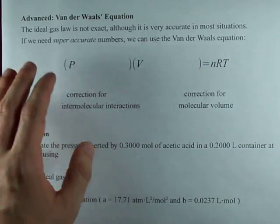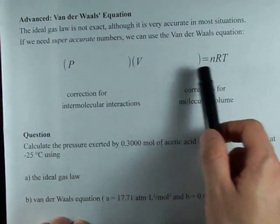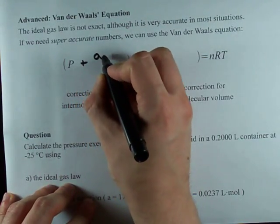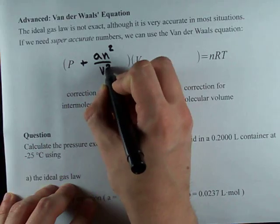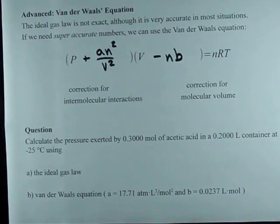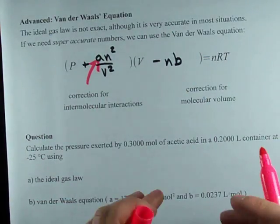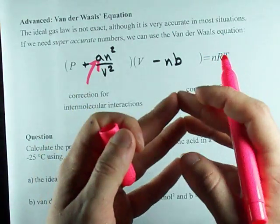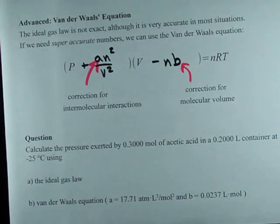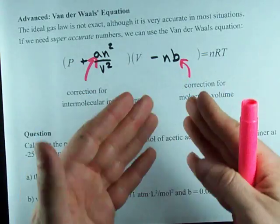Now the problem is, if we need a super accurate number we can't be making those kinds of assumptions. So we have a more accurate version of PV equals NRT and it's called the Van der Waals equation. It's different in that you add a term AN squared over V squared to the pressure, and you subtract a term NB from the volume. This A accounts for the fact that there actually are intermolecular forces between the gas molecules, and this B accounts for the fact that the molecules actually do take up a little bit of volume.